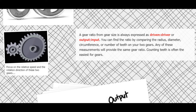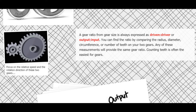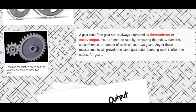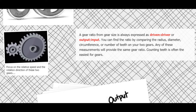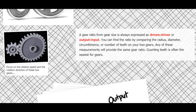How can I find the gear ratio? The easiest thing to do is compare gear sizes — the diameter, radius, or circumference. But usually, the easiest approach is just to count the number of teeth on your two gears, and that will give you the gear ratio.